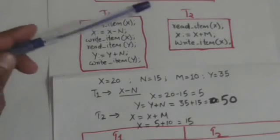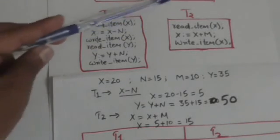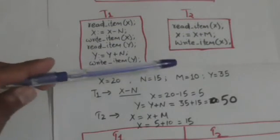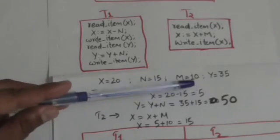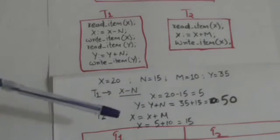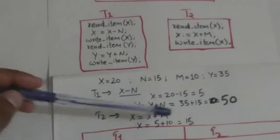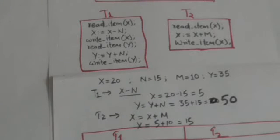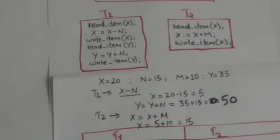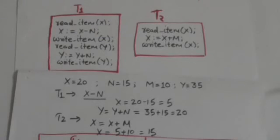After T1 completes, transaction T2 adds m (10) to x. The current value of x is 5, so x becomes 5 + 10 = 15. So if the schedule of T1 and T2 is serial, the final value of x will be 15, which is correct.